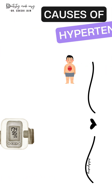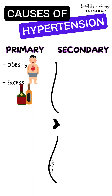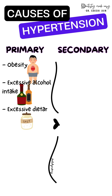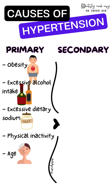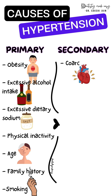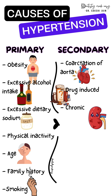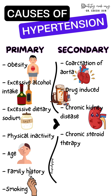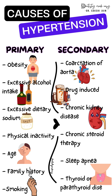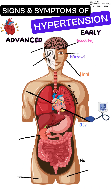We will do a quick recap from third year on the causes of hypertension. Causes can be primary or secondary. Primary can be due to various reasons, while secondary is when there is an underlying problem such as coarctation of aorta, drug-induced causes, chronic kidney disease, thyroid or parathyroid disease, prolonged steroid therapy, or sleep apnea.